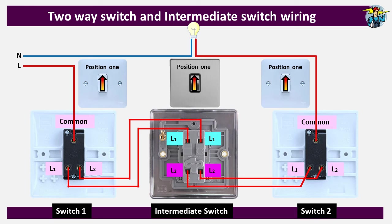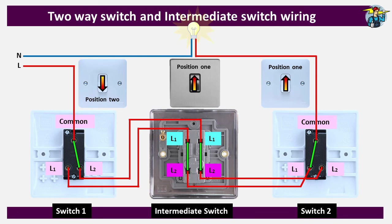The wiring is now complete. With all three switches at upward position — position one — the green lines show how the terminals are connected internally and the bulb is lit since the electrical circuit is completed. If someone at the start of the corridor changes switch one to downward, the light switches off. Then if someone in a room in the middle of the corridor needs to go out at night, they change the nearest intermediate switch to the downward position, which changes its internal arrangement and completes the circuit again, lighting the bulb.